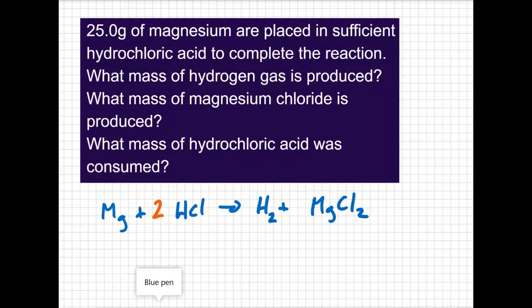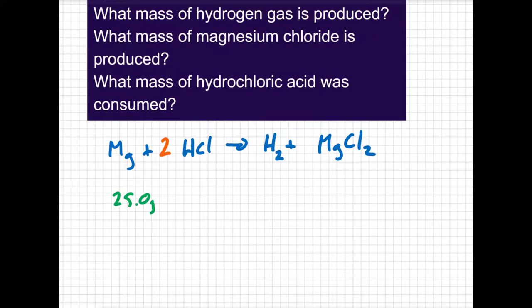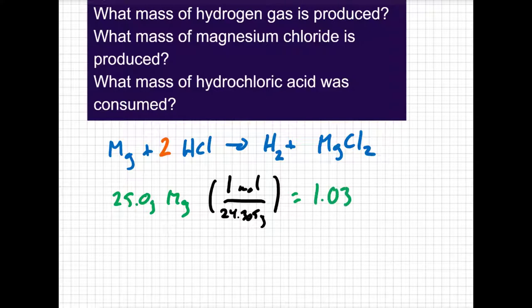Step one, step two, we've got to convert our 25 grams of magnesium into moles. 25 grams of magnesium. From the periodic table, the molar mass of magnesium is 24.305 grams. When I convert my amount of magnesium to moles, I get 1.03 moles of magnesium.